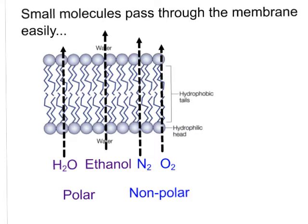Small molecules pass through the membrane easily. If we have very small molecules like water, ethanol, nitrogen, and oxygen — they only have a few atoms in them — they will all pass relatively easily through the membrane from one side to the next. These first two happen to be polar and the last two happen to be non-polar, and regardless of their polarity, when they're small enough, they usually can get through the membrane easily.